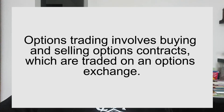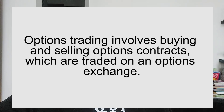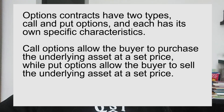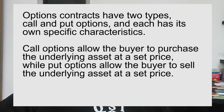How does options trading work? Options trading involves buying and selling options contracts, which are traded on the options exchange. Option contracts have two types — call and put options — and each has its own specific characteristics. Call options allow the buyer to purchase the underlying asset at a set price, while put options allow the buyer to sell the underlying asset also at a set price.